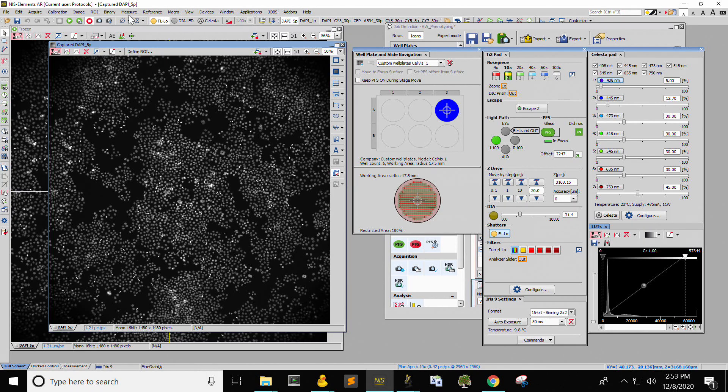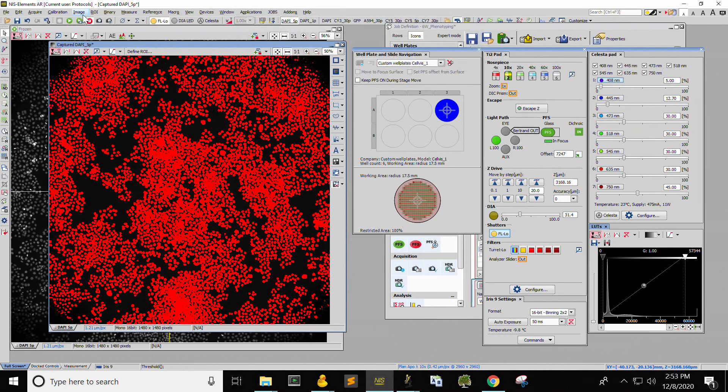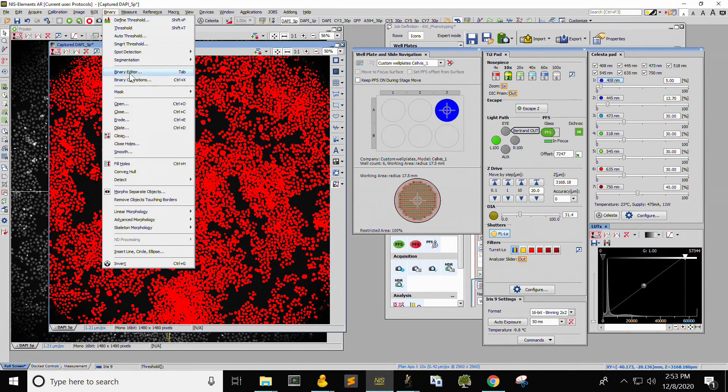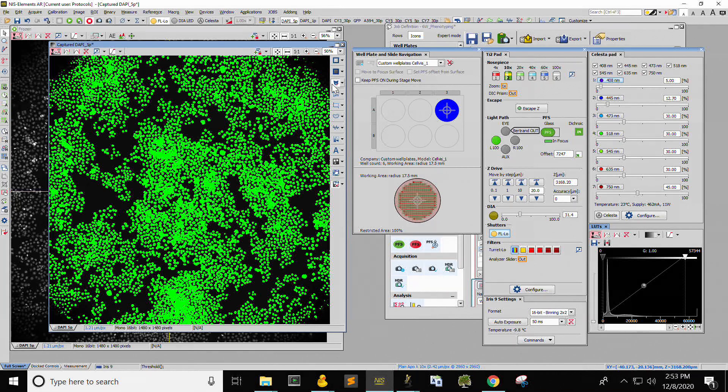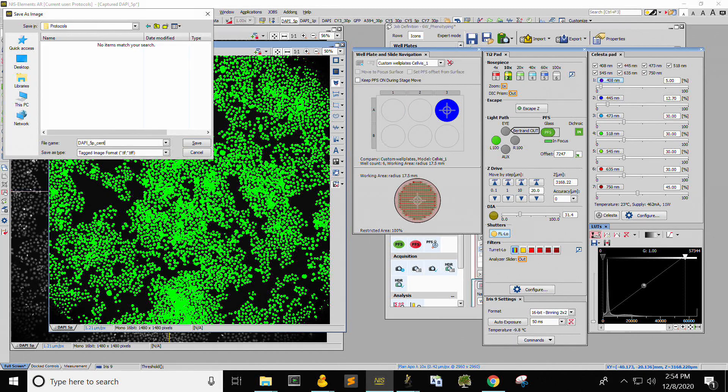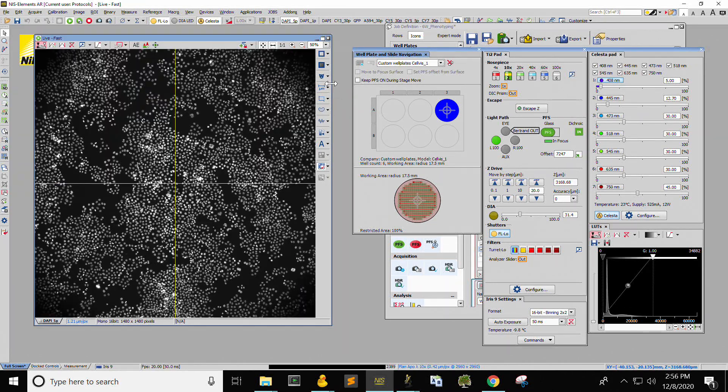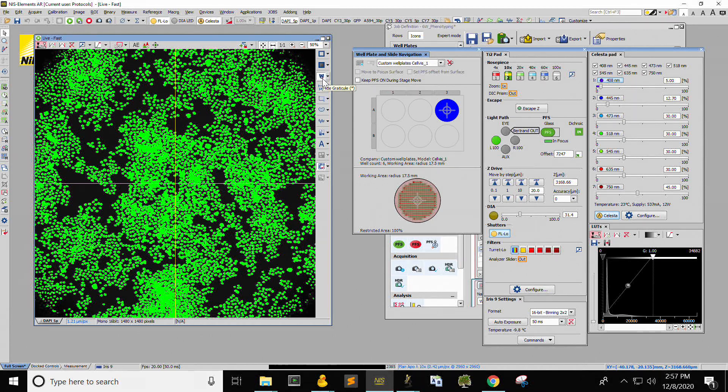For subsequent rounds, align by creating a mask from the center image of the DAPI channel of first round data. This can be done by loading the image and using the DefineThreshold, then DefineMaskByThreshold functions to mark the nuclei. Save the mask and load it when imaging the next round of data. While on live view, move the sample until the current DAPI image overlaps with the first round. Then, create an SPS job that uses center point alignment to perform all other acquisitions.